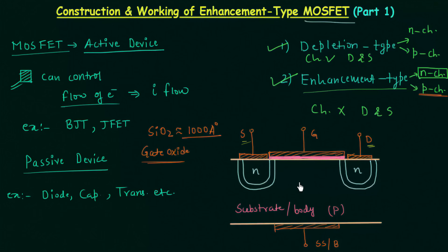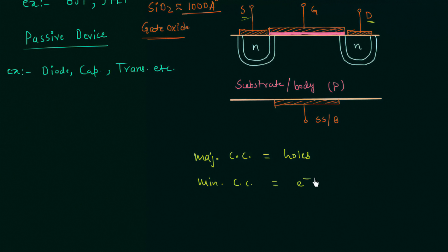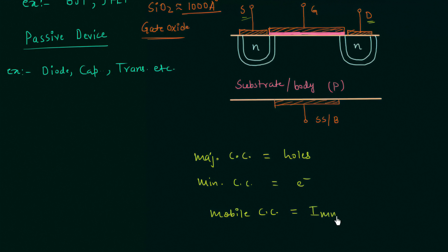Now let's try to understand how the channel is formed. The substrate is made of P type material, so the majority charge carriers are holes and the minority charge carriers are electrons, and the overall charge neutrality is maintained. This means mobile charge carriers have the same number as the immobile ions.